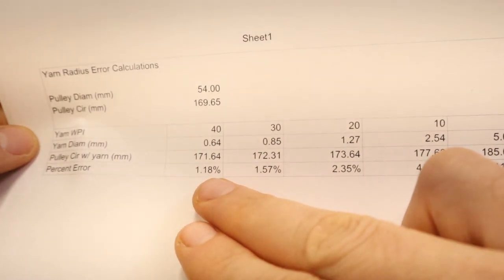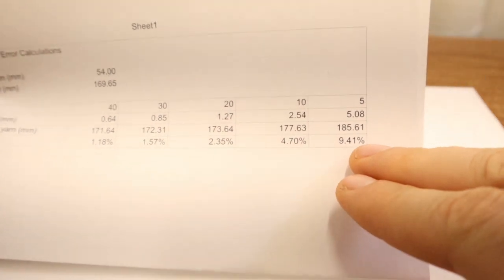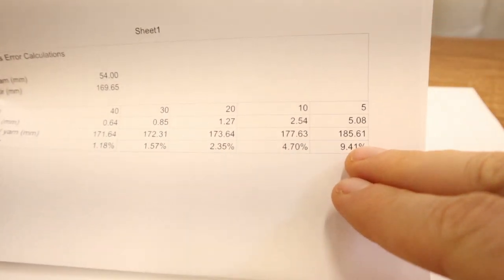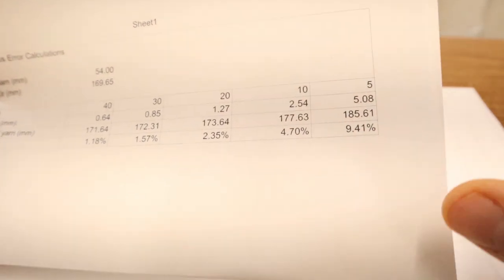I'll probably have a different video about how yarn stretches and how you want to be consistent when you're measuring it. But know that there will be some error. I just don't want too much error. So if it was just one percent, I would probably say that's good. However, as you get to really big wraps per inch yarn, it can creep up to like nine percent or so.